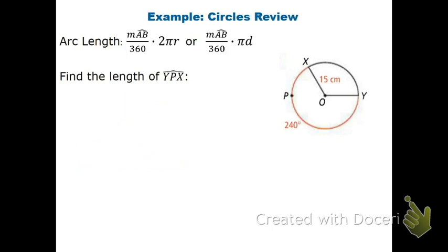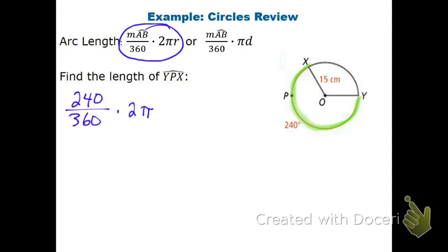The last problem is finding the length of the major arc YPX — going from Y through P to X. I take the measure of the arc divided by 360, times the circumference: 240 divided by 360, times 2 pi times the radius of 15. That gives 62.83. Since this is just the length of that arc, the units are centimeters.